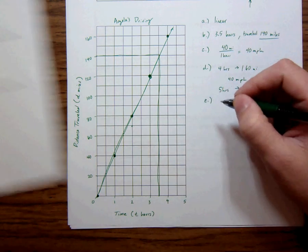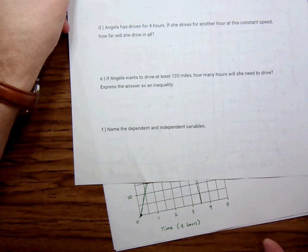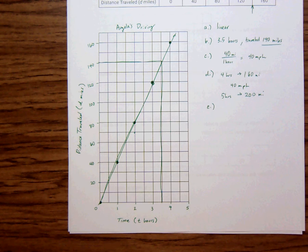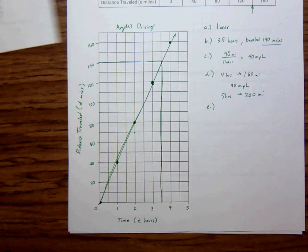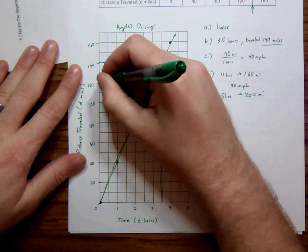Part E. If Angela wants to drive at least 120 miles, how many hours will she need to drive to express your answer as an inequality? So the way to do that is to say, okay, so 120 is right here.